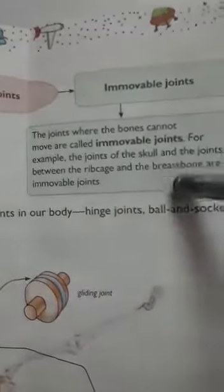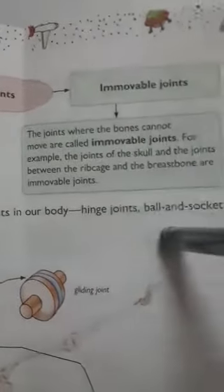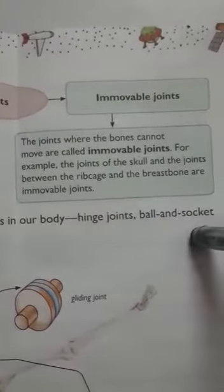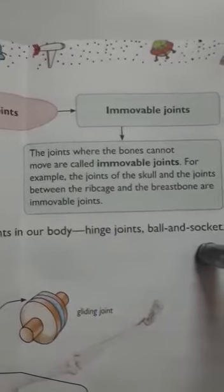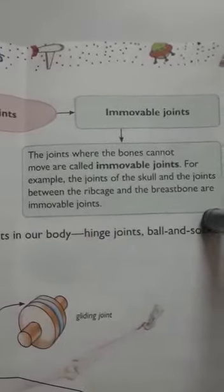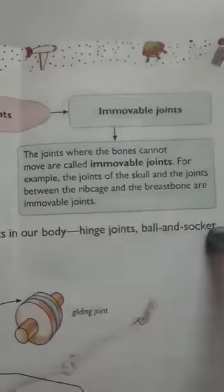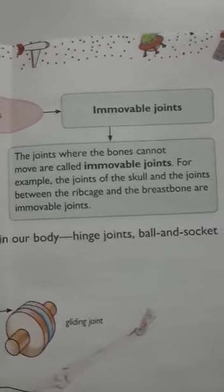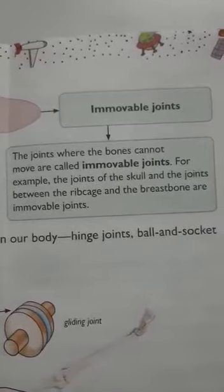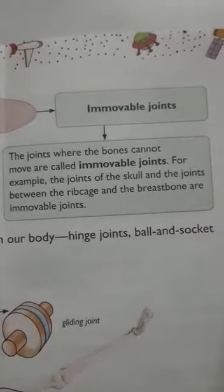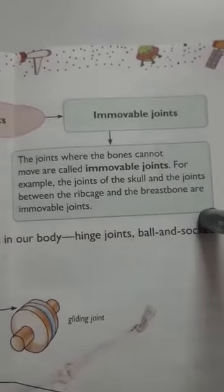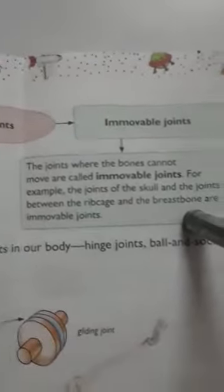In the skull there are no movements — we cannot move any bone in our head. Only the lower jaw joint of the skull is movable; otherwise the skull has immovable joints. The ribcage and breastbone are also immovable joints. All joints contain a fluid that acts as a lubricant, like oil, and allows bones to move smoothly.